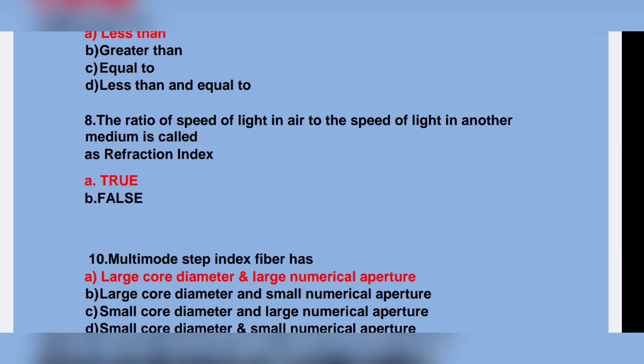The ratio of speed of light in air to the speed of light in another medium is called True. Multi-mode step index fiber has large core diameter and large numerical aperture.